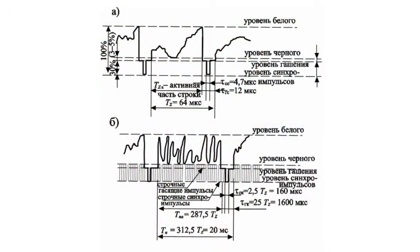The second type is determined by the lowest value of the input signal which makes it possible to maintain stable synchronization. It should have a value of no more than 40 µV for the metric range, and no more than 70 µV for the decimetric range.